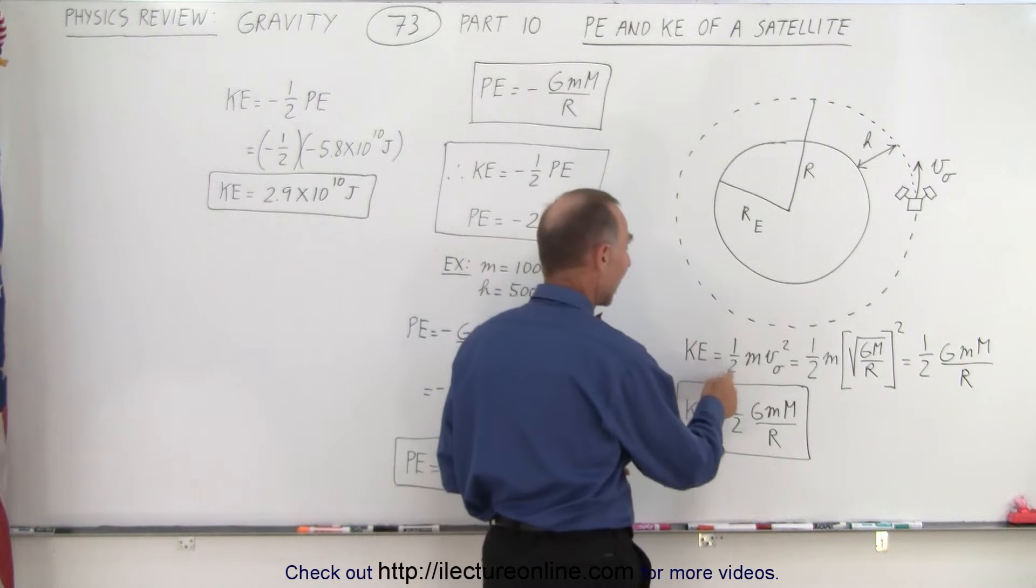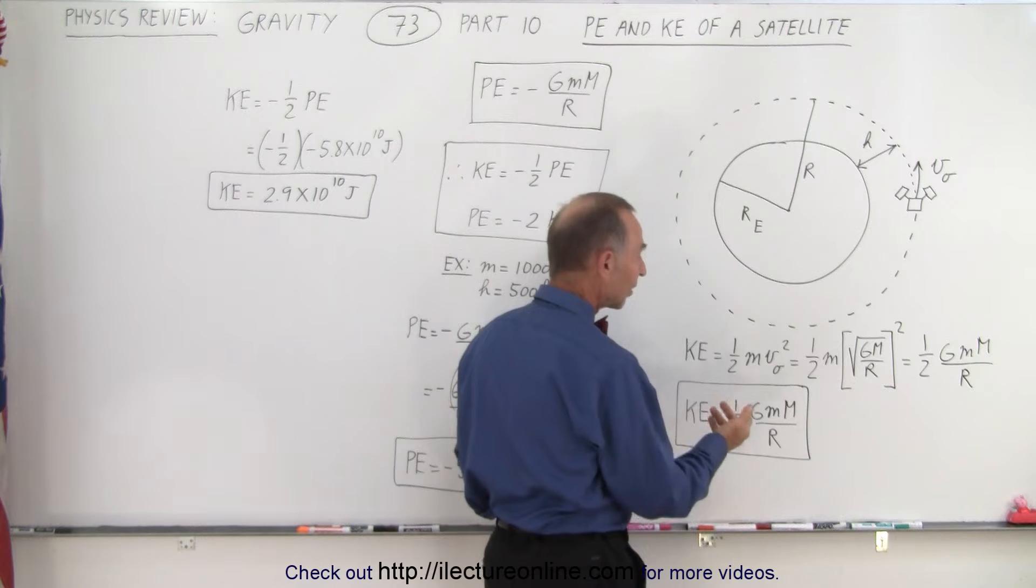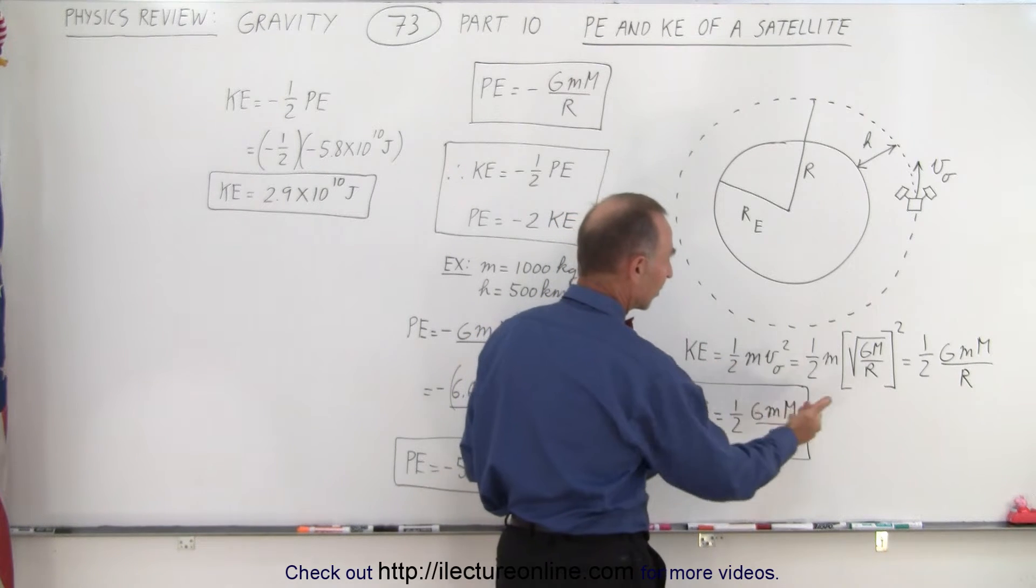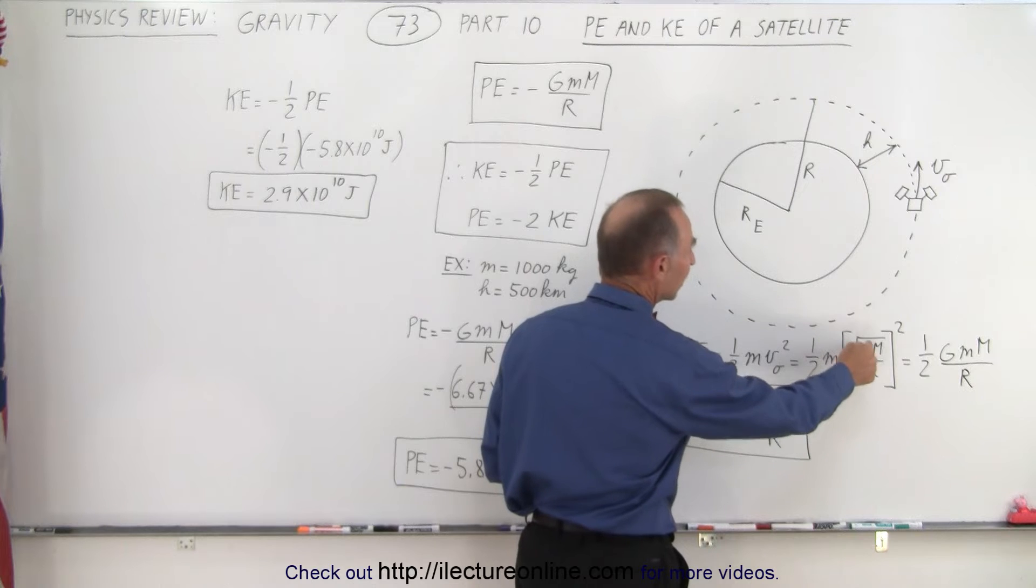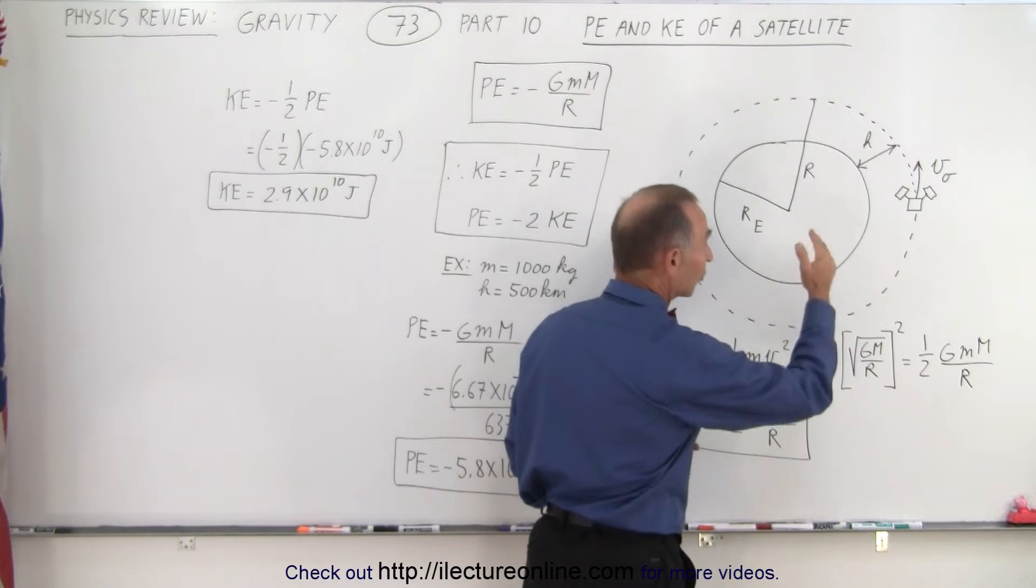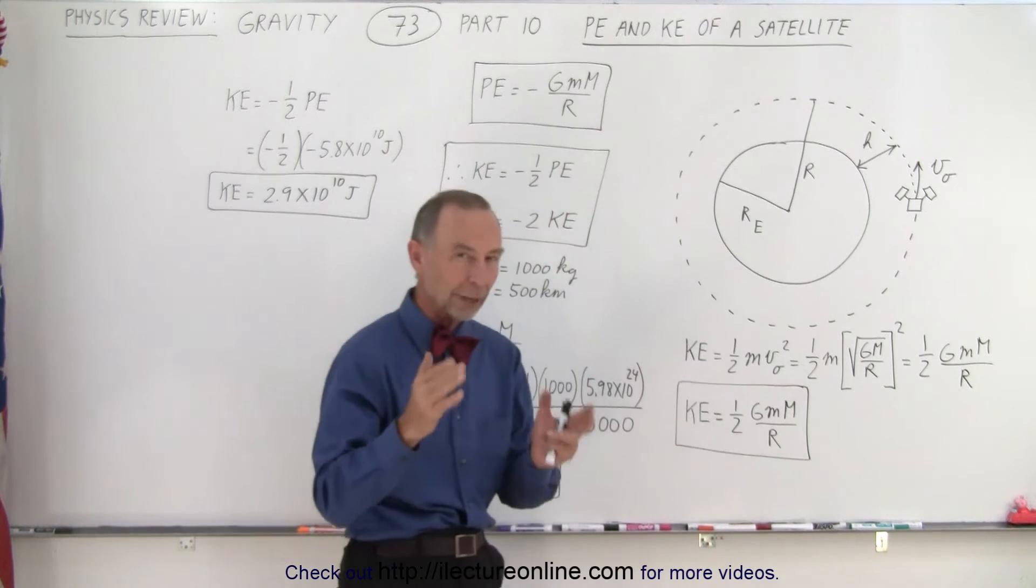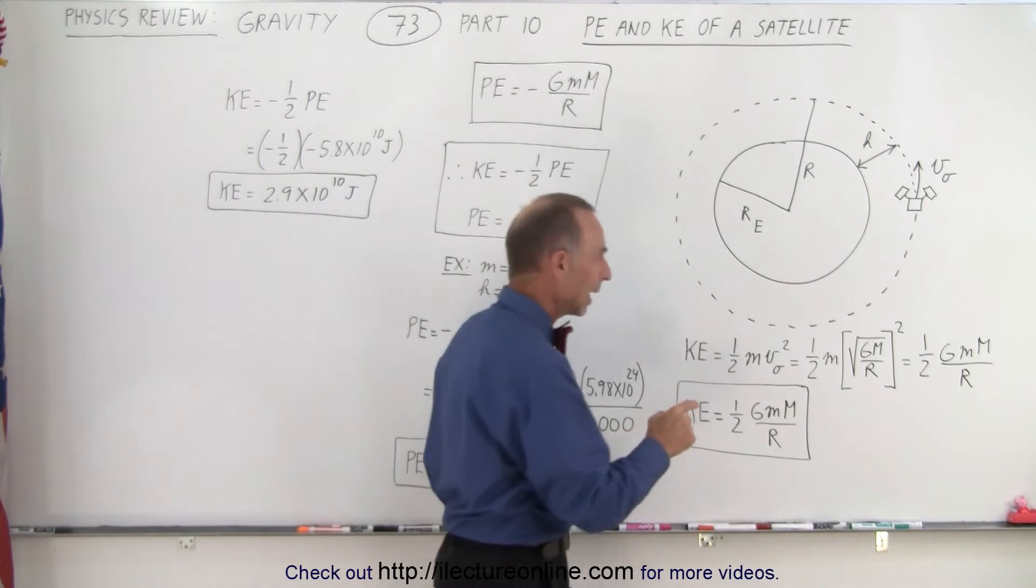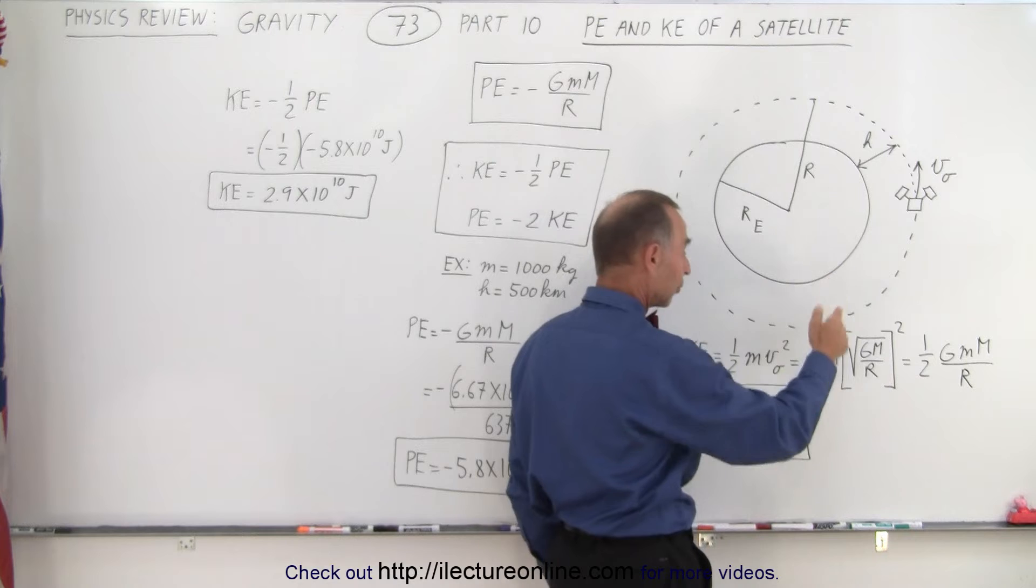Kinetic energy is always going to be 1/2 mv squared, but in this case it's going to be the orbital velocity squared. And the orbital velocity is equal to the square root of g times the mass of the Earth divided by the radius of the orbit, which is of course the sum of the radius of the Earth and the height above the surface of the Earth for the orbit.